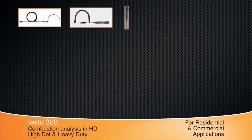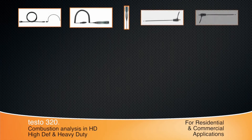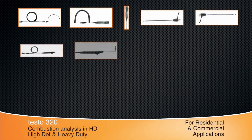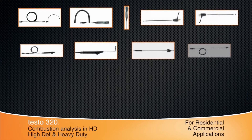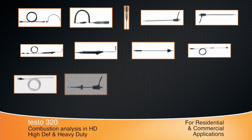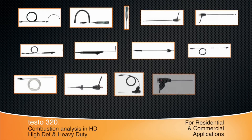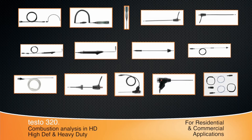The Testo 320 has a probe available for almost any measurement. For more job site testing, longer hose lengths and probes for gas leak, ambient carbon monoxide, and carbon dioxide measurements are available.